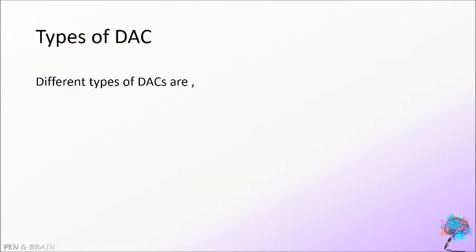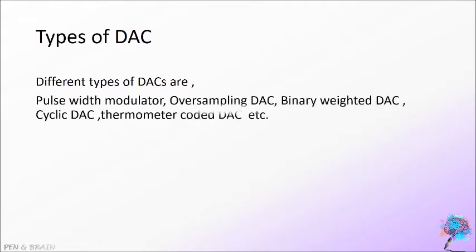Types of DAC. Different types of DACs are pulse width modulator, oversampling DAC, binary weighted DAC, cyclic DAC, thermometer chorded DAC, etc. Let us see about binary weighted DAC.